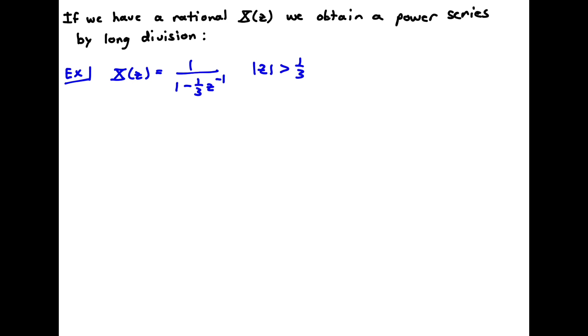Okay, we can also use power series expansion to obtain the inverse transform of a rational x of z using long division. And here's how we do that. We're simply taking 1 minus a third z inverse into 1. So I'm setting up my long division here. And I'm going to see what this results in. This is going to result in an infinite series here.